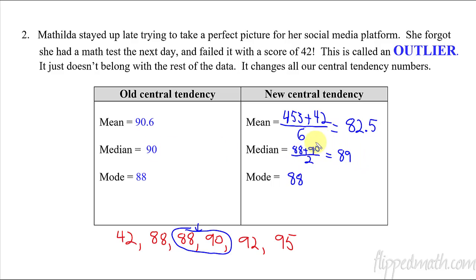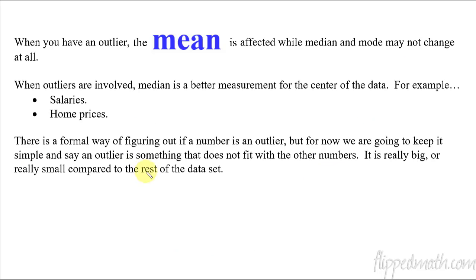Okay. So you can see what changed the most. The mean changed. The median and the mode hardly changed at all. The mode didn't change at all. But the median barely changed. It went from 90 to 89. So when we talk about central tendency, when you have an outlier, it's important to recognize because then some of these are not as accurate to reflect the data as others. When you have an outlier and mean are affected, while median and mode, they may not change at all. So median is usually going to be our thing that we're going to use more often. When outliers are involved, we want to use median.